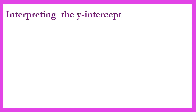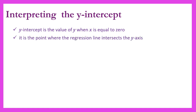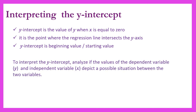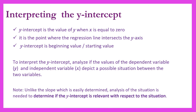In interpreting the y-intercept, we have to remember that the y-intercept is the value of y when x is equal to 0. It is the point where the regression line intersects the y-axis, and it is the beginning or starting value. To interpret the y-intercept, we should analyze if the values of the dependent variable y and independent variable x depict a possible situation between the two variables. Unlike the slope, which is easily determined, analysis of the situation is needed to determine if the y-intercept is relevant.